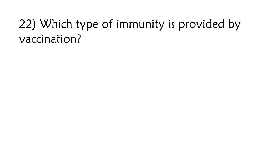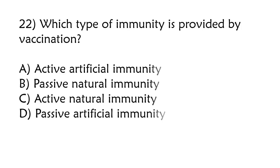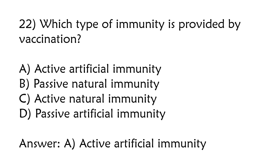Which type of immunity is provided by vaccination? Active artificial immunity, passive natural immunity, active natural immunity, passive artificial immunity. The correct answer is option A, active artificial immunity.